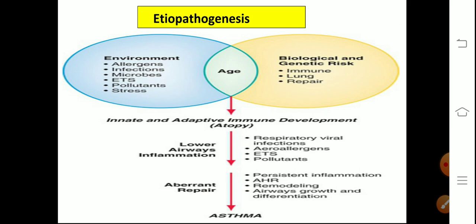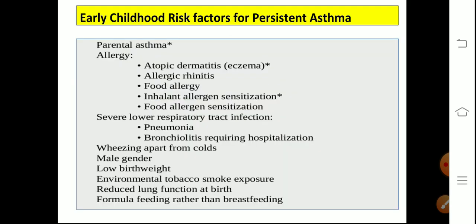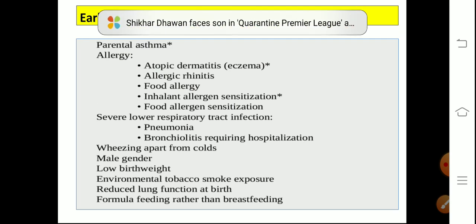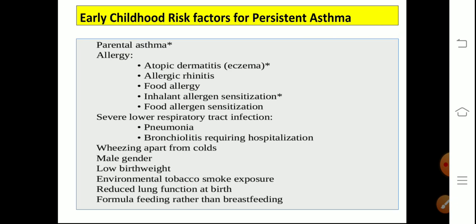The early childhood risk factors for persistent asthma: the most important major risk factors are parental asthma and history of atopy in the child itself. Atopy can present as atopic dermatitis, allergic rhinitis, or food allergy. If these are present, the child has greater chances for development of persistent asthma in later life. Apart from these, other risk factors include male gender, low birth weight, and environmental tobacco smoke exposure.